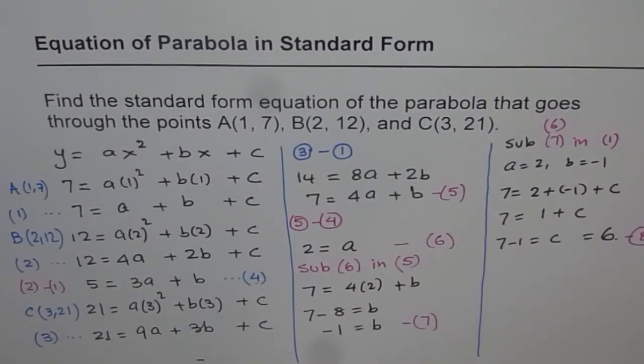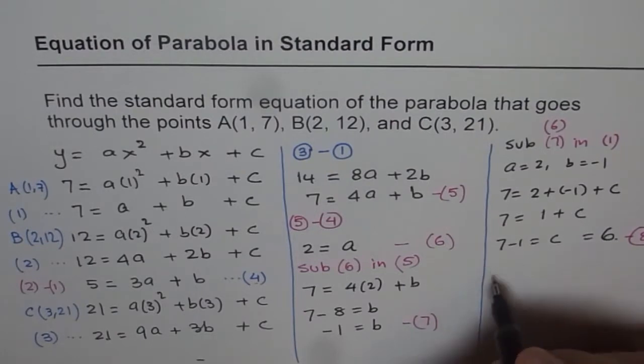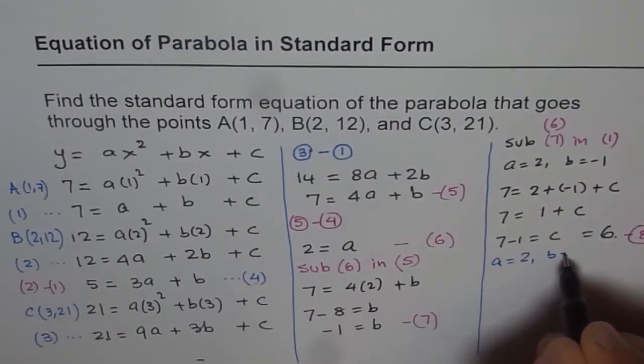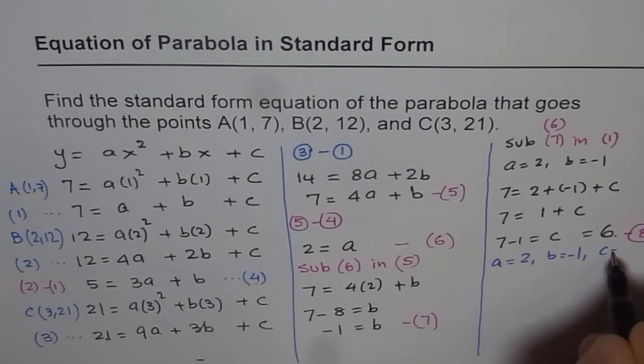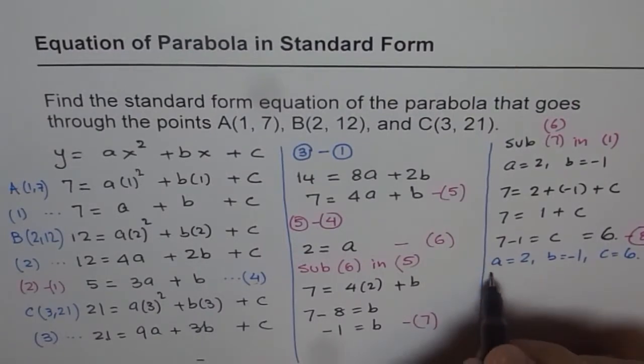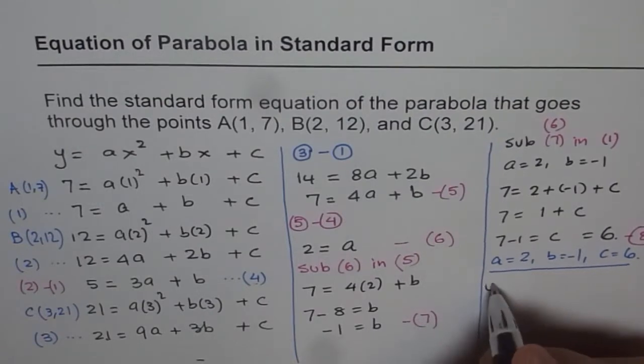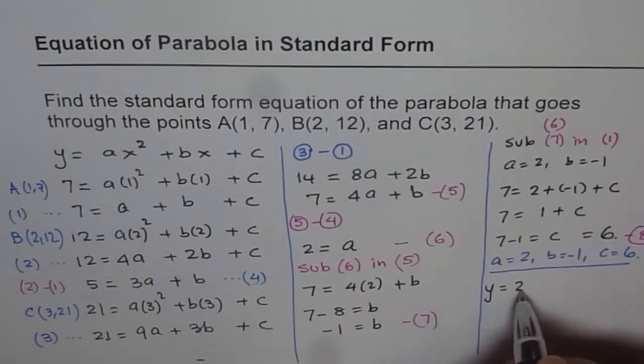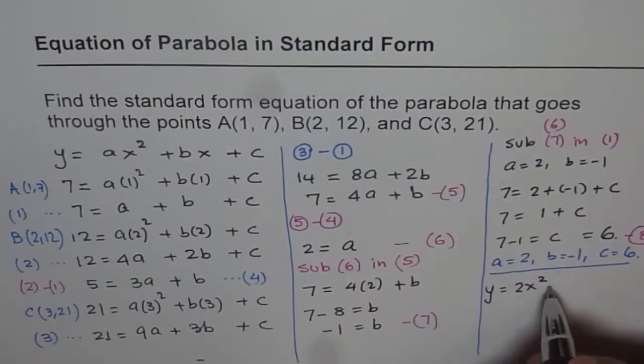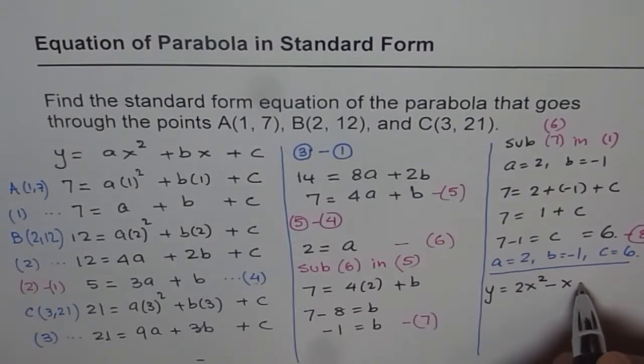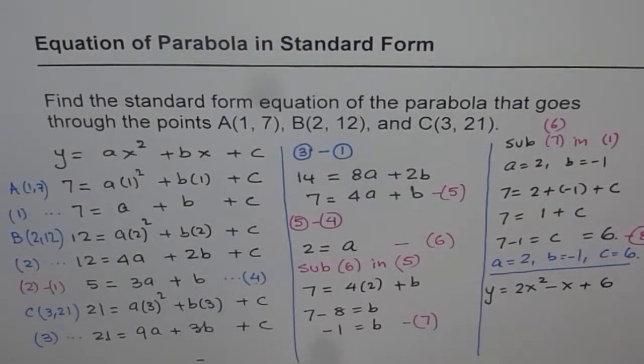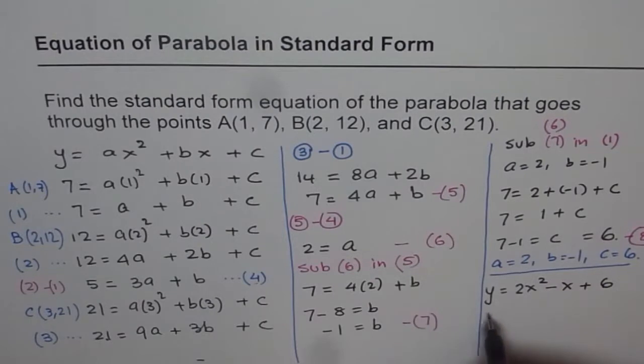So now we know that a equals 2, b equals minus 1, and c equals 6. That gives our equation, which is y equals 2x squared minus x plus 6. So that is the solution for this problem.